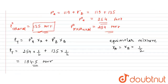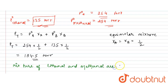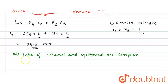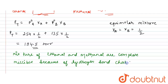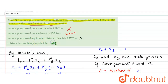Finally, regarding the option that the mixture is completely immiscible — we know that ethanol and methanol are completely miscible because of their hydrogen bond character. So that option is incorrect. Therefore, option B is the correct answer.